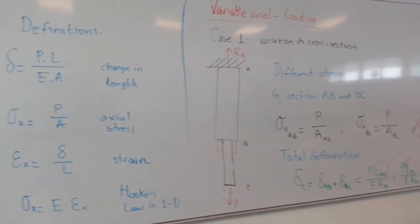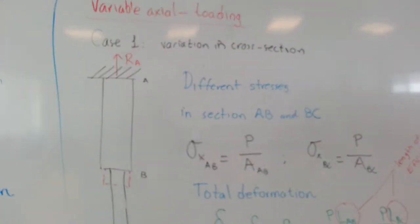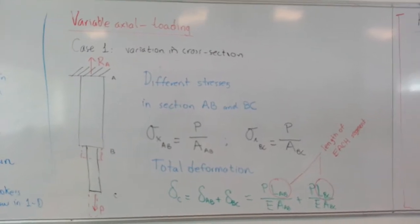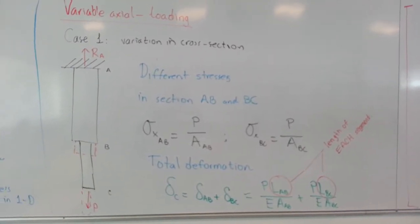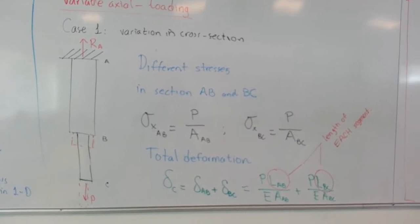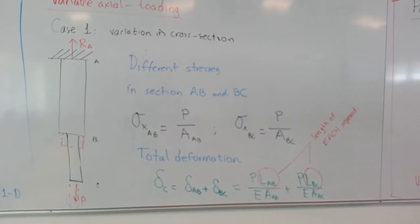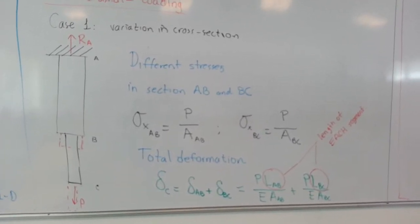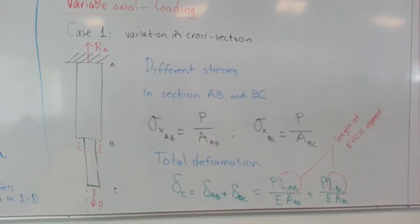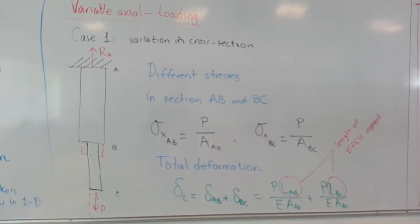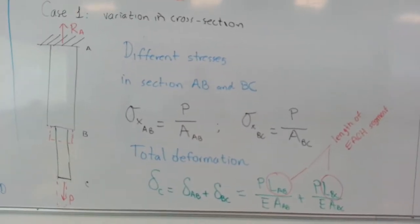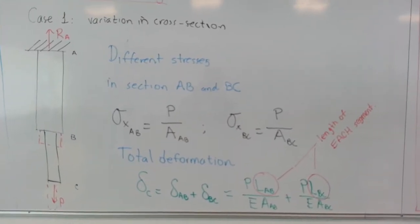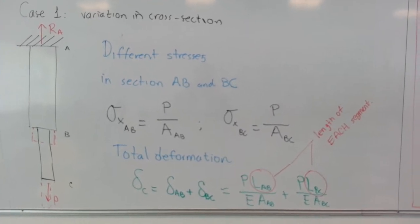Today we move to a new case that involves variable axial loading. That is the case when we have different cross sections for a bar subjected to axial loading. We can see here in the formula for the stresses that we have to use the area of the cross section for each segment. And the important thing is that when we calculate the total deformation we have to use the length for each segment.